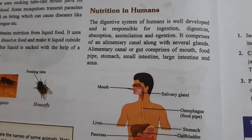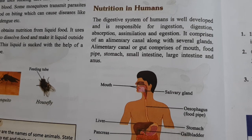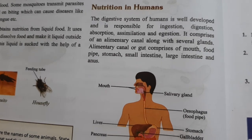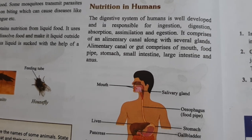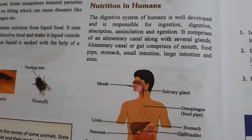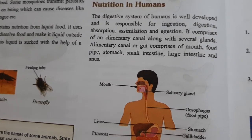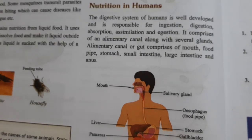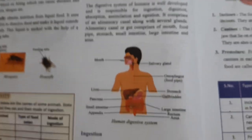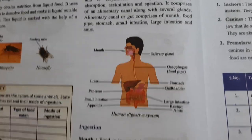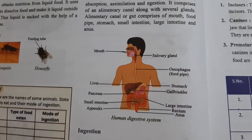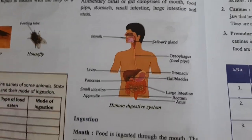The glands include the liver, salivary glands, and pancreas. The alimentary canal or gut comprises the mouth, food pipe, stomach, small intestine, large intestine, and anus.